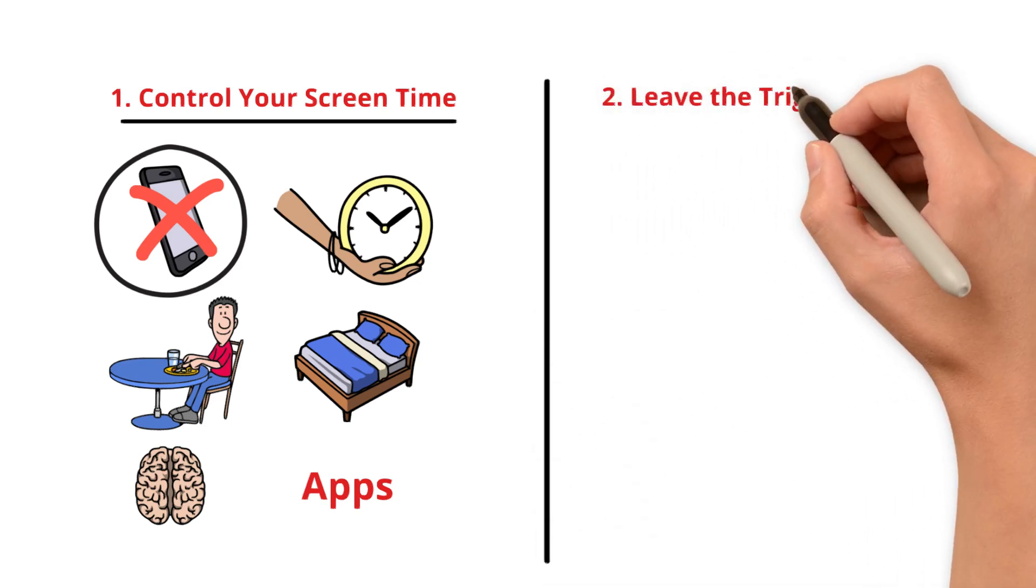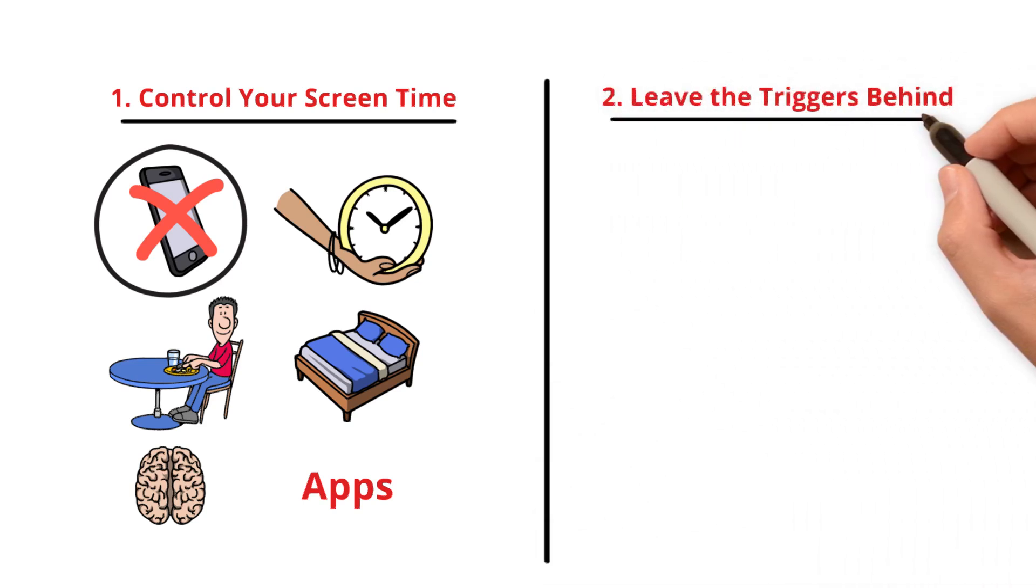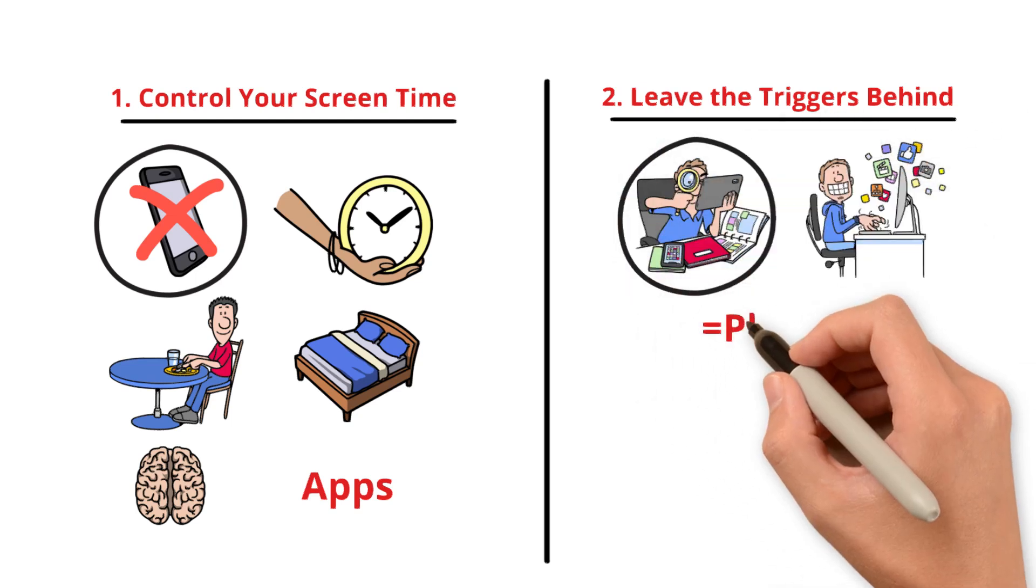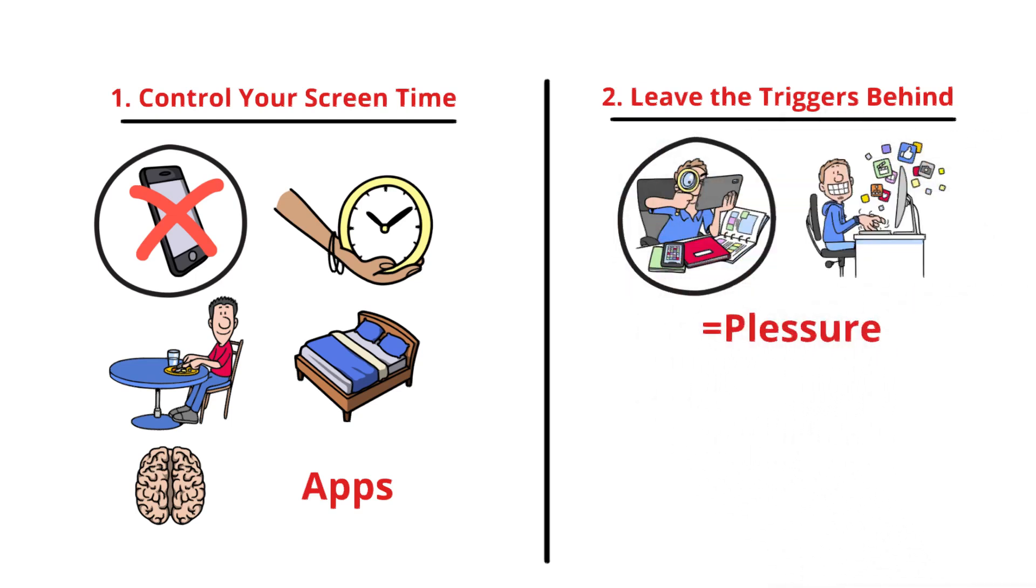Number two. Leave the triggers behind. Let's be real. If you're addicted to porn or social media, you need to leave those triggers behind. They release dopamine levels equal to real-life pleasure. And that's hard to break. But here's the thing. You can break it.